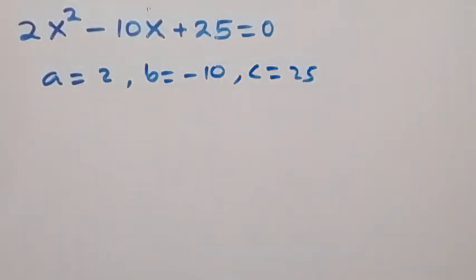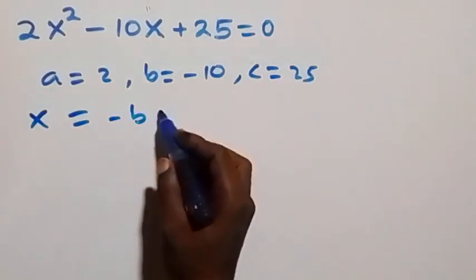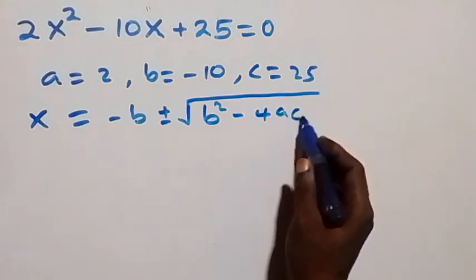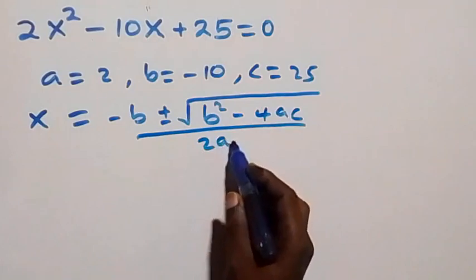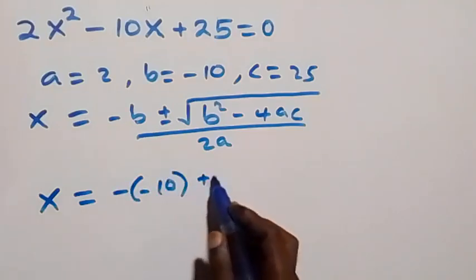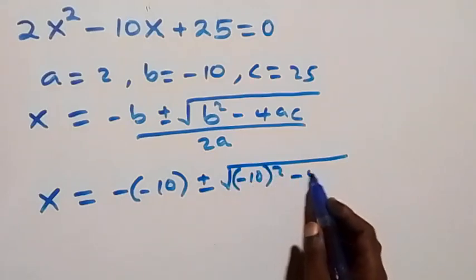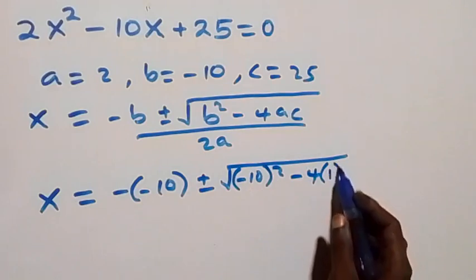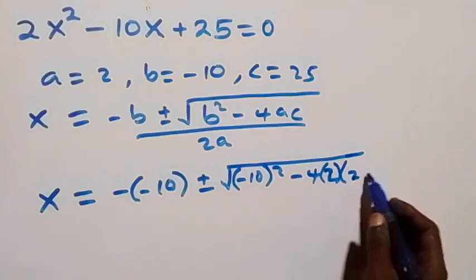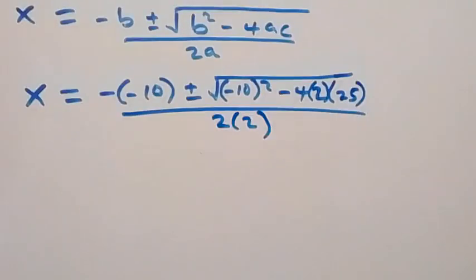Using the quadratic formula x equals minus b plus or minus square root of b squared minus 4ac, over 2a, we have x equals 10 plus or minus square root of minus 10 squared minus 4 times 2 times 25, over 2 times 2.